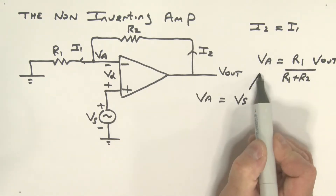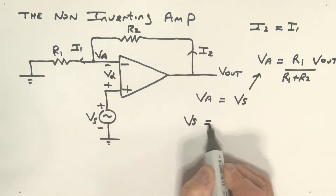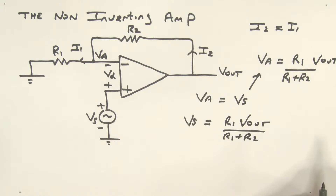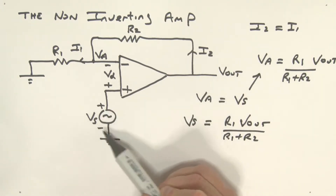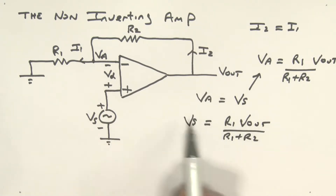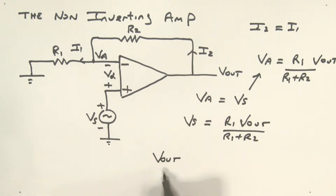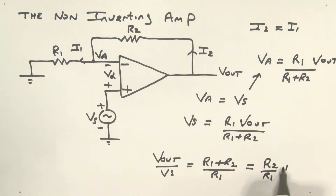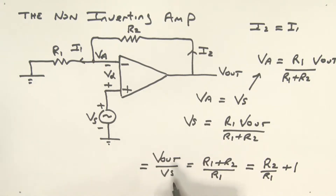Substituting into the above equation, Vs equals R1 times Vout divided by R1 plus R2. What we're trying to find is the closed-loop voltage gain, which is Vout over Vs. Rearranging, Vout over Vs equals R1 plus R2 over R1, which can be rewritten as R2 over R1 plus 1. This is the closed-loop voltage gain AV for the non-inverting amplifier.